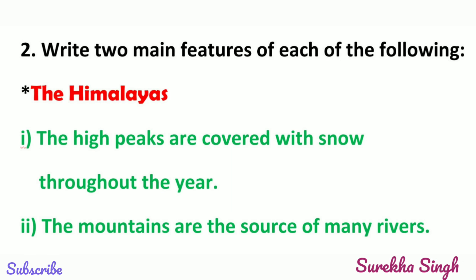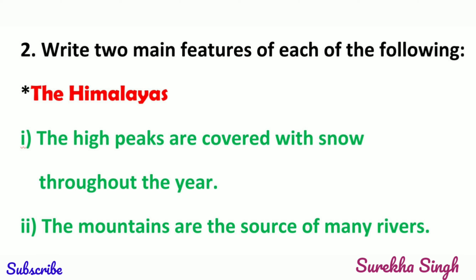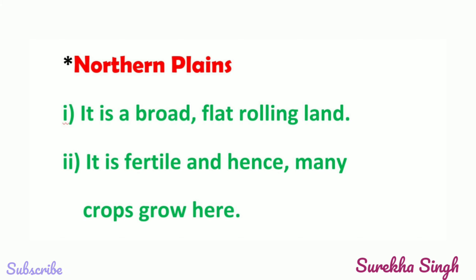Question 2: Write two main features of each of the following. The Himalayas: 1. The high peaks are covered with snow throughout the year. 2. The mountains are the source of many rivers. Northern Plains: 1. It is a broad, flat, rolling land. 2. It is fertile and hence many crops grow here.